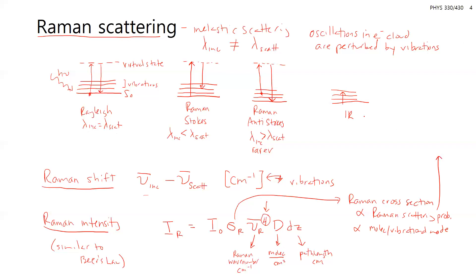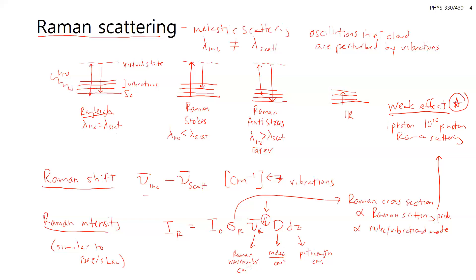Raman is a very weak effect. Most processes are going to undergo Rayleigh scattering, but for Raman, only one photon out of about 10 to the 10th photons undergoes Raman scattering. Because it is such a weak effect, there are a lot of instrumentation considerations — you have to remove a lot of the Rayleigh scattering to be able to detect the Raman signal. The challenge is: how do I detect this very low signal over everything else that's taking place?